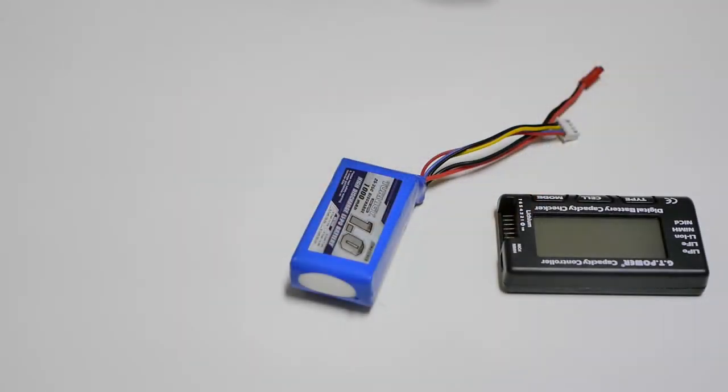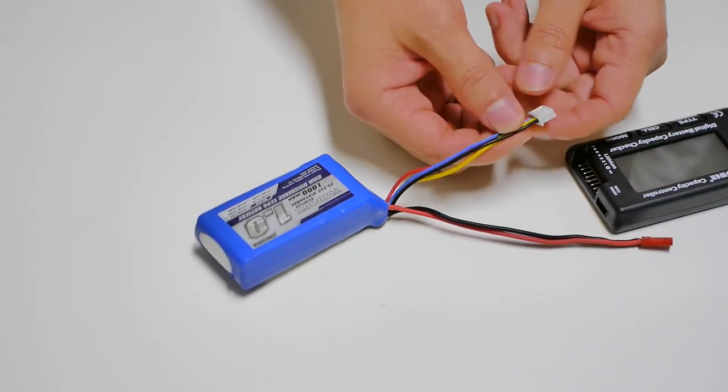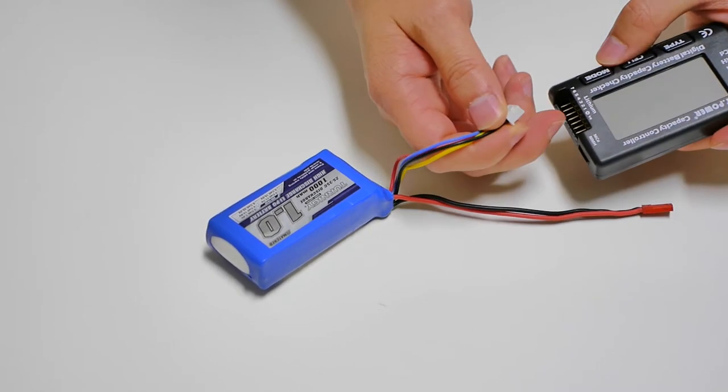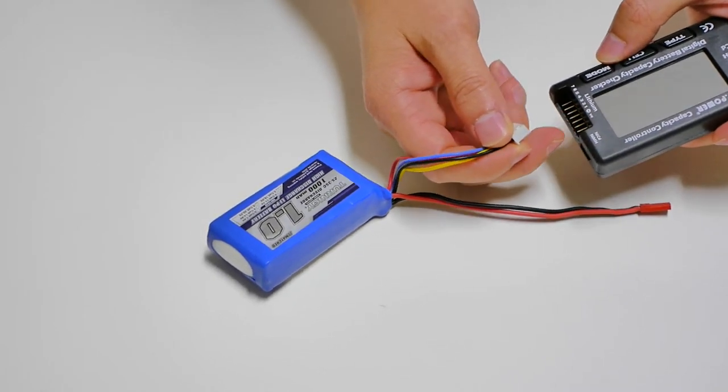We are going to plug in this 3s 1000 milliamp lipo pack. Before you plug in the battery, make sure the black wire goes into the negative marked side of the plug.